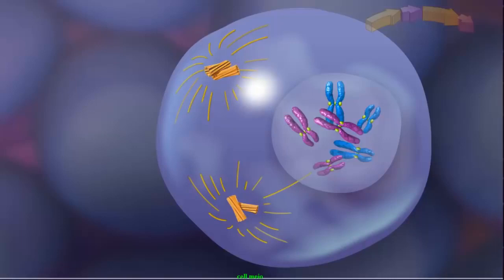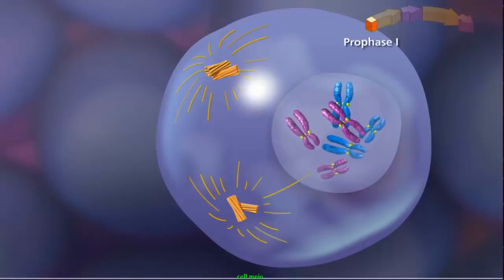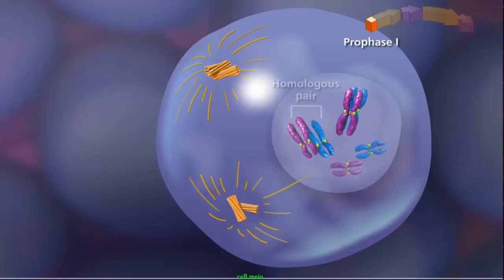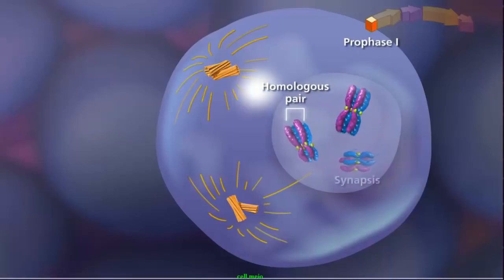The first event occurs during prophase I, when homologous pairs of sister chromatids lie side by side in a process called synapsis, forming a tetrad or bivalent. The homologous chromosomes share similar, but not necessarily identical, genes.